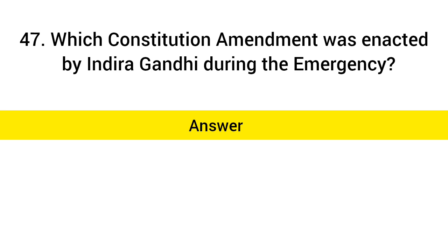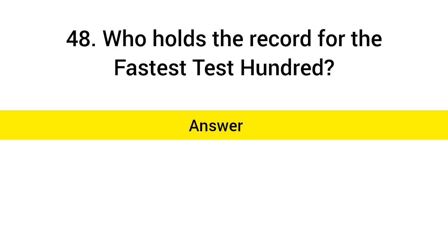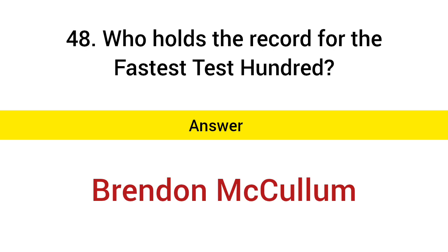Which constitutional amendment was enacted by Indira Gandhi during the Emergency? Answer: 42nd Amendment. Who holds the record for the fastest Test century? Answer: Brendon McCullum.